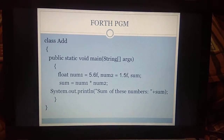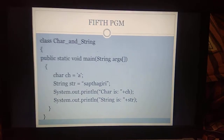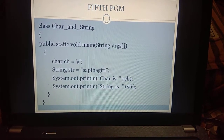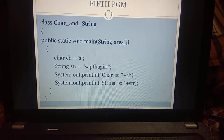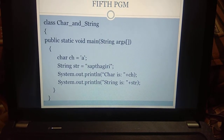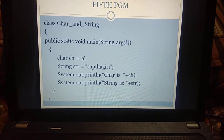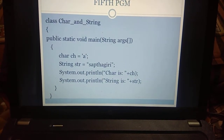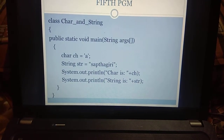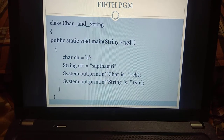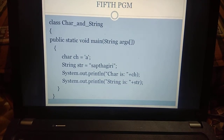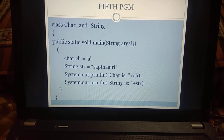I hope you understand the fourth program. Next is the fifth program. In the fifth program, we are declaring a character variable as well as a string variable and displaying them. We are creating a class named char_and_string. Opening the class, we give public static void main. We are declaring a character variable: char ch = 'a'. 'a' is a character, so we have to give it in single quotes — whenever you declare a character variable you must use single quotes. Next, we are declaring a string variable str and assigning the value 'sub-degree' in double quotes, which will be stored in str.